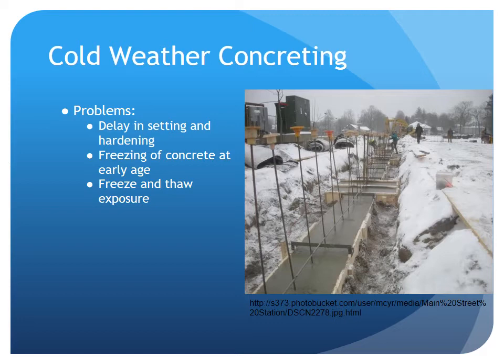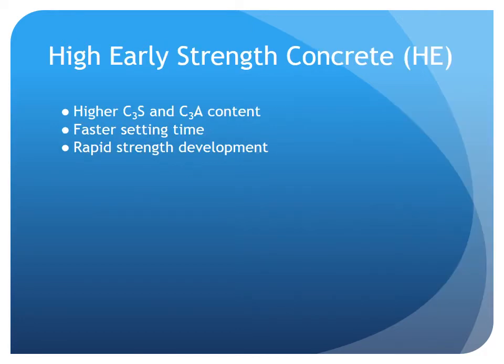One of the most common methods currently used in the field is using hot water to create the mixture. This counteracts the effects of the external environment to increase the rate of hydration. One solution to pouring concrete in cold weather is using high early strength concrete. This mixture contains higher amounts of tricalcium silicate and tricalcium aluminate, which leads to a faster setting time. The rate of hydration will keep the temperature of the mix high enough to gain rapid strength development before there is any effect from temperature.